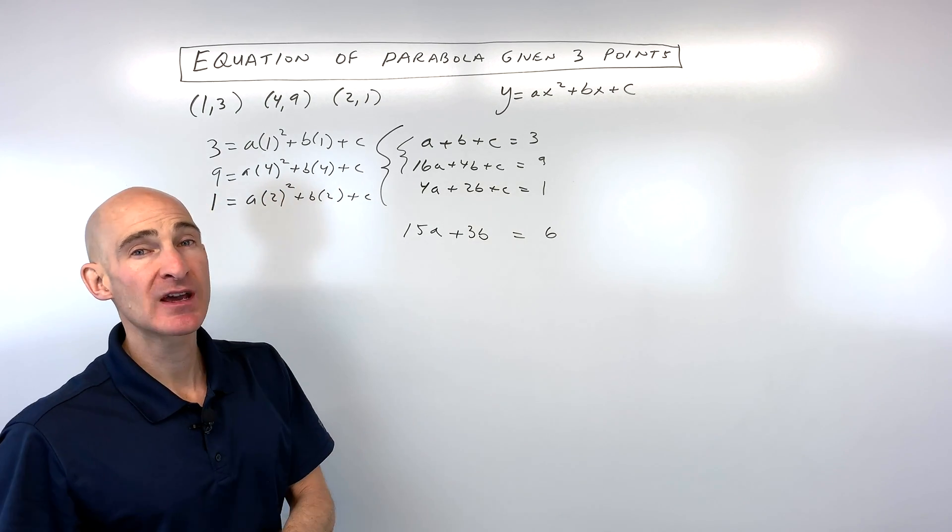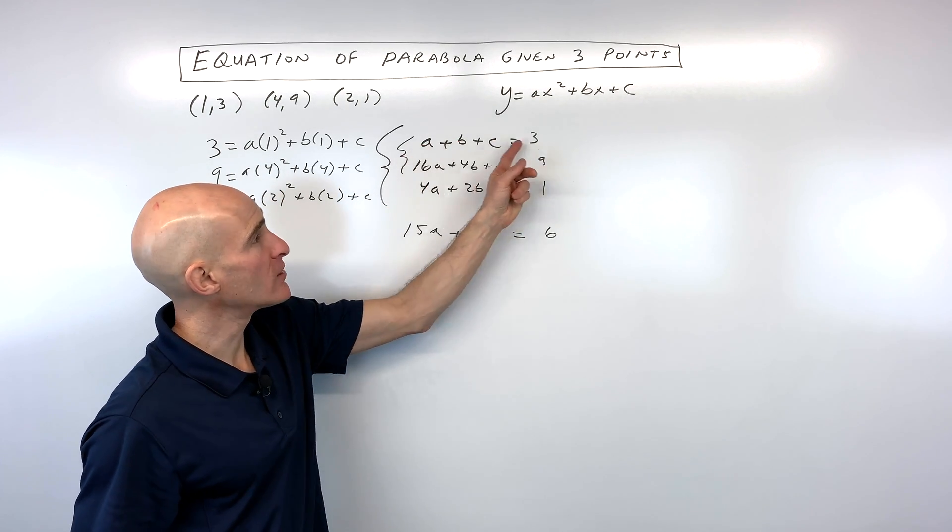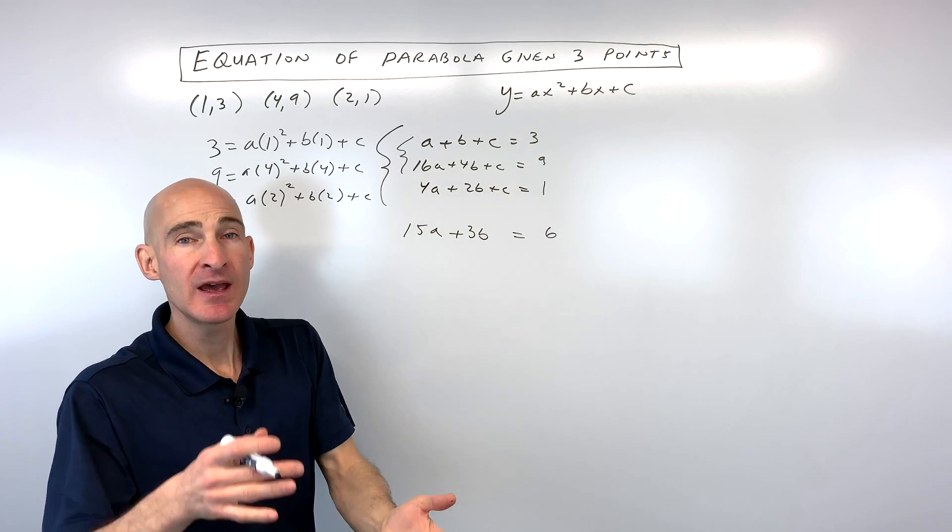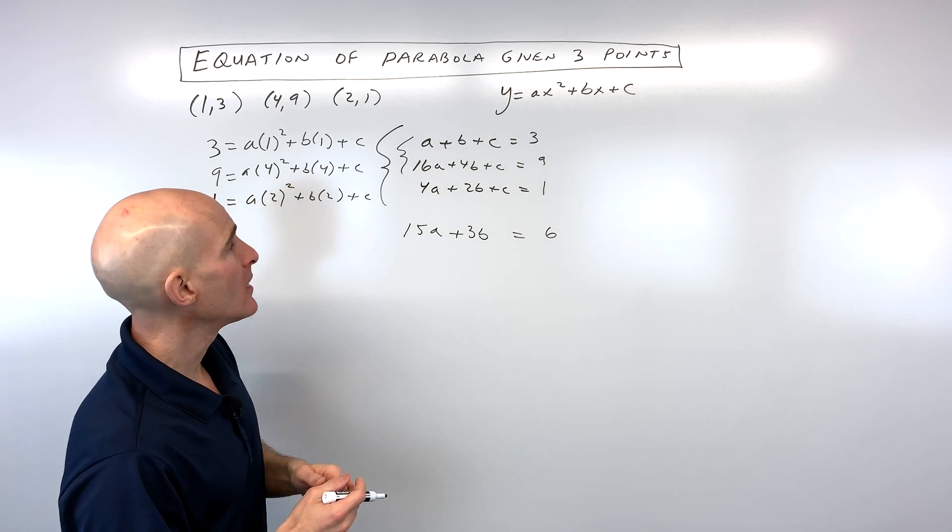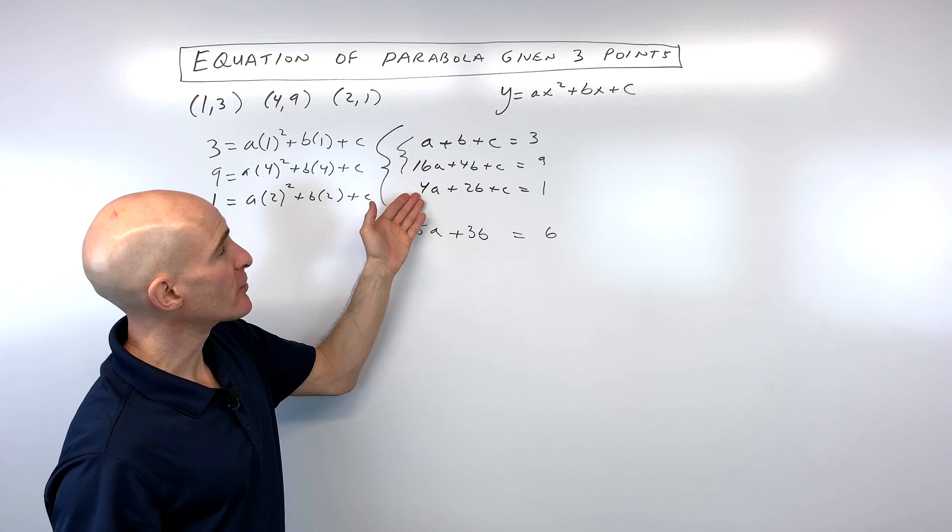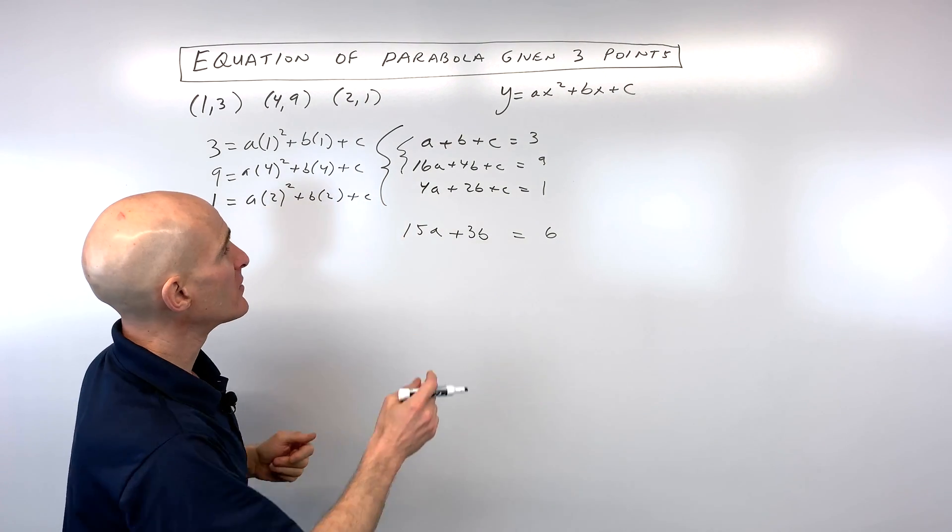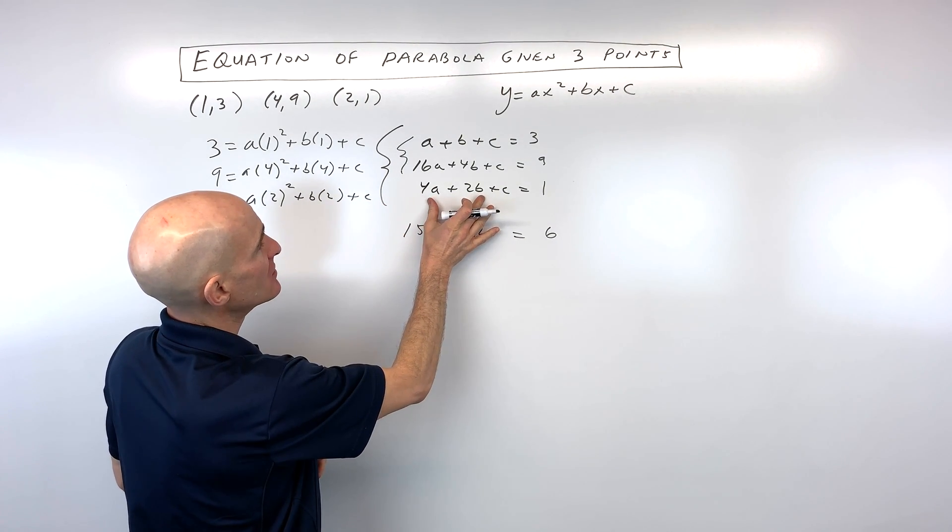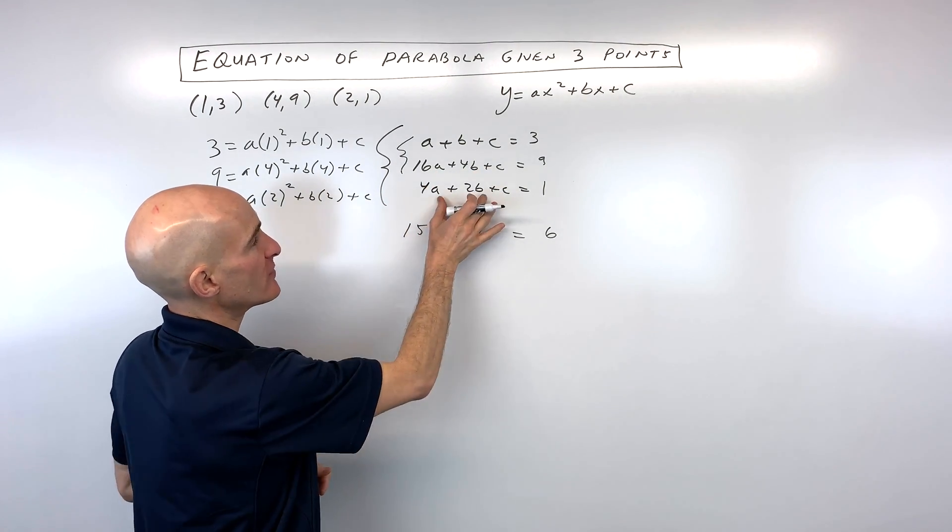Now another way that students oftentimes like to do this is they like to multiply one of the equations by a negative one, and then add instead of subtracting, and you can do that as well. Now we've used the first and second equations. We need to use the third equation as well. So what I'm going to do is I'm going to take this third equation and I'm going to subtract the second equation from this third equation.